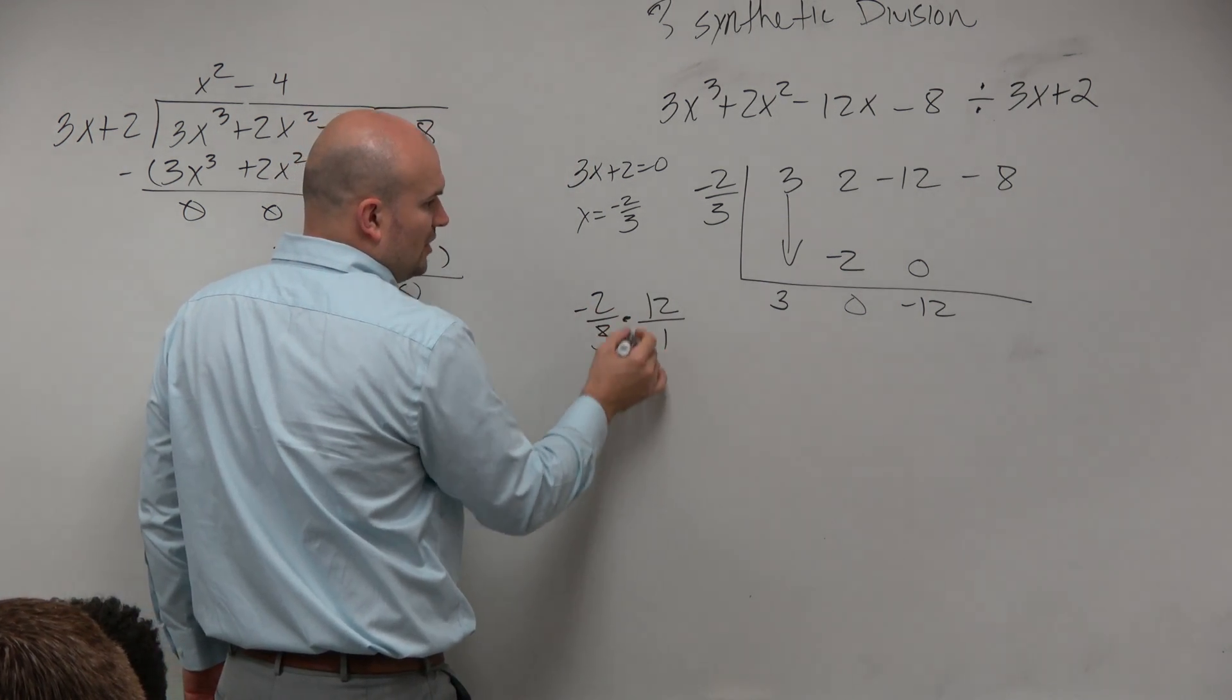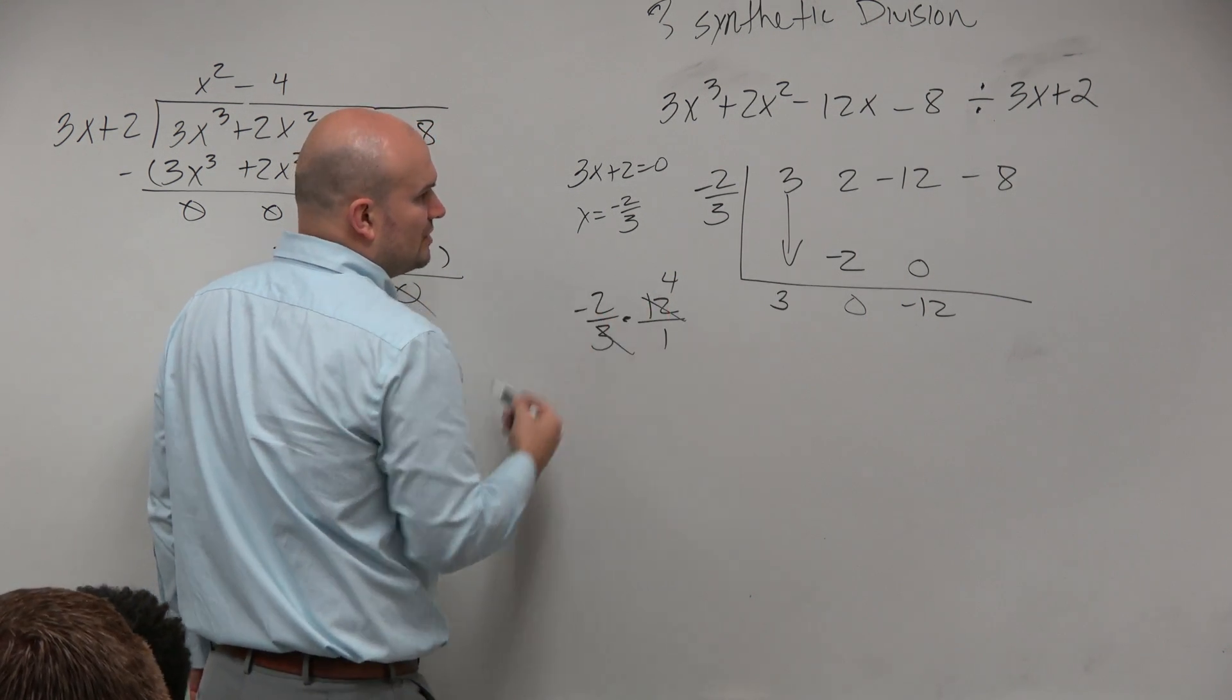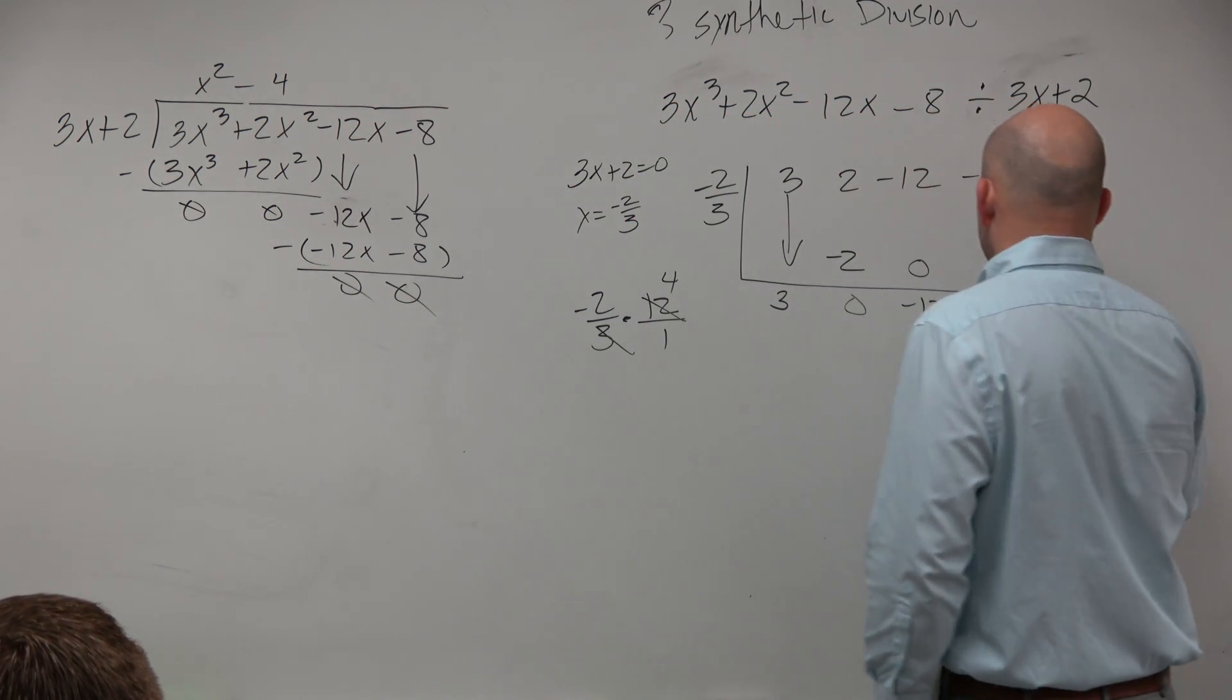Divide the 3 into the 12 four times. 3 goes into 12 four times. So negative 2 times 4 is going to be 8, negative 8. And then you get a 0.